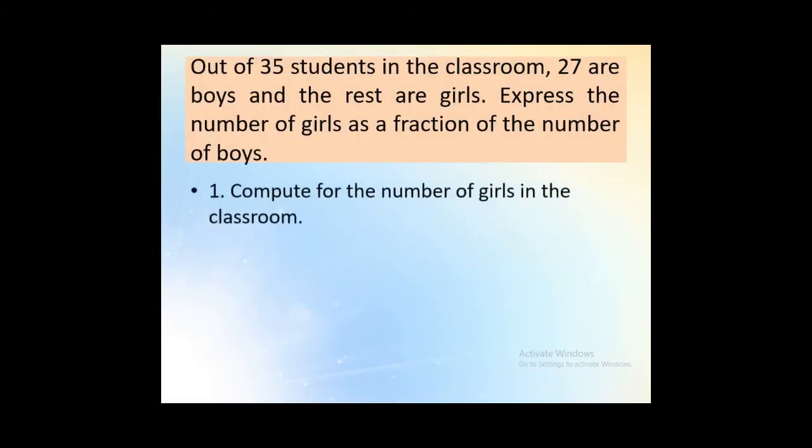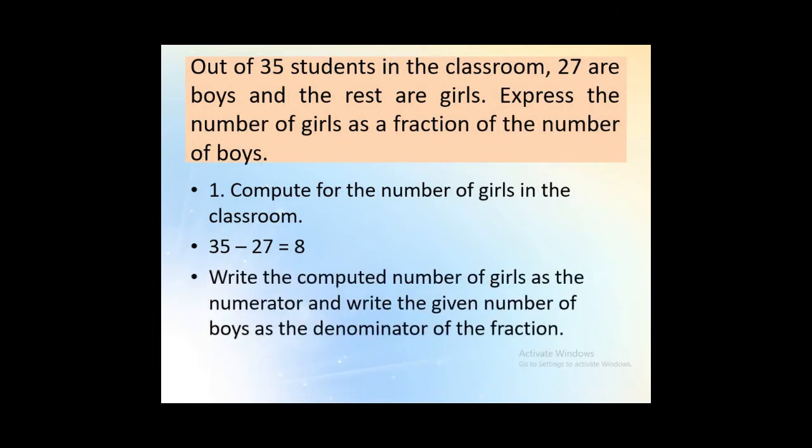Let's have another example. Out of 35 students in the classroom, 27 are boys and the rest are girls. Express the number of girls as a fraction of the number of boys. First, compute for the number of girls in the classroom. So 35 minus 27, so that is 8. Write the computed number of girls as the numerator and write the given number of boys as the denominator of the fraction. 8 over 27, so 8 over 27 is the answer.